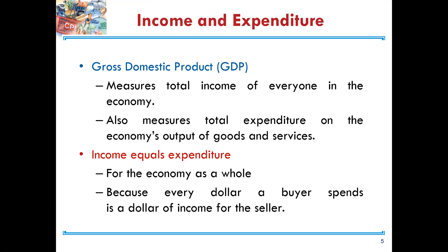So what is GDP? GDP measures total income of everyone in the economy. It also measures total expenditure on the economy's output of goods and services. What this means is that income equals expenditure, and this is true for the economy as a whole, because every dollar a buyer spends is a dollar of income for the seller.